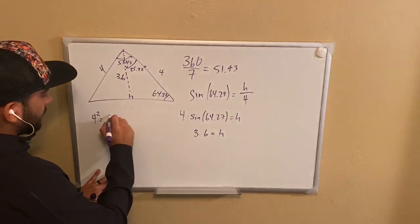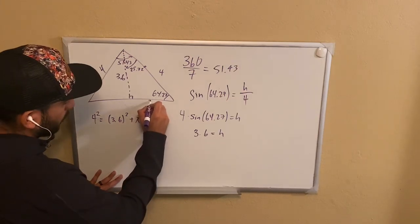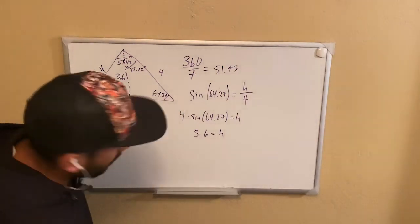is equal to 3.6 squared plus X squared. This would be our X right here.